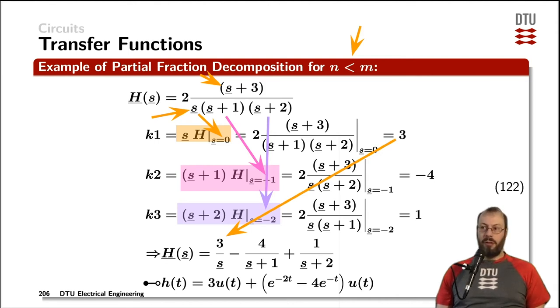That gives us three different numbers that we can put in the new format of the partial fraction decomposition. For the first pole, it's three; for the second pole, it is minus four; and for the third pole, that parameter is one.